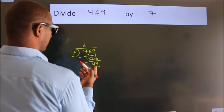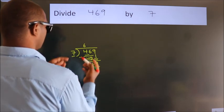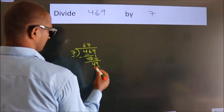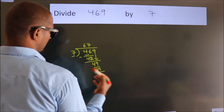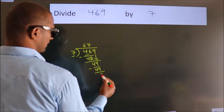When do we get 49 in the 7 table? 7 times 7 is 49. Now we subtract. We get 0.